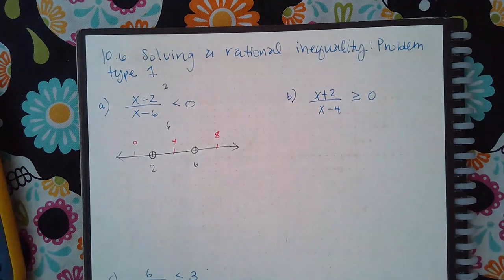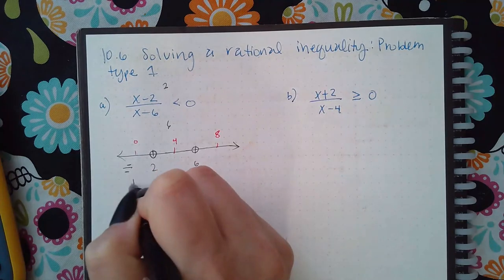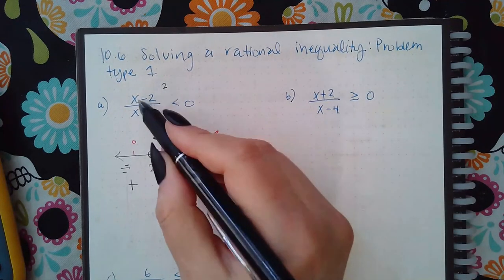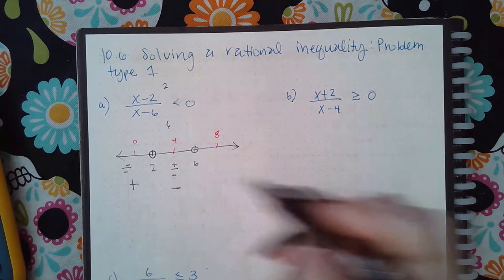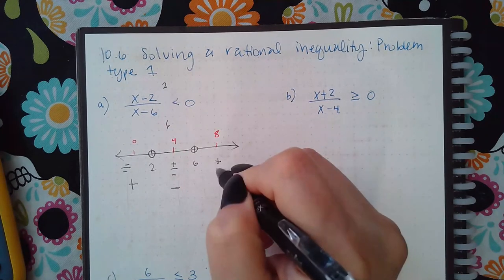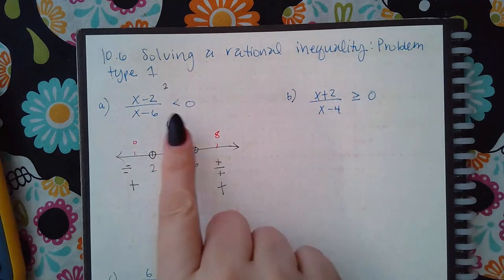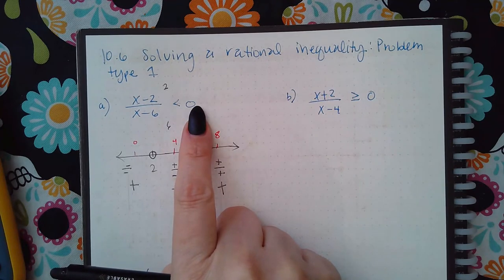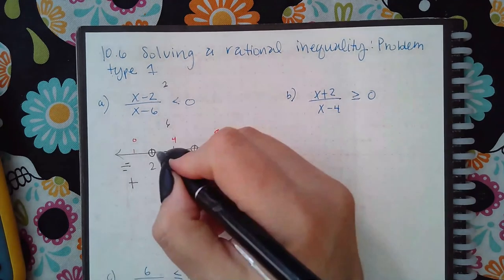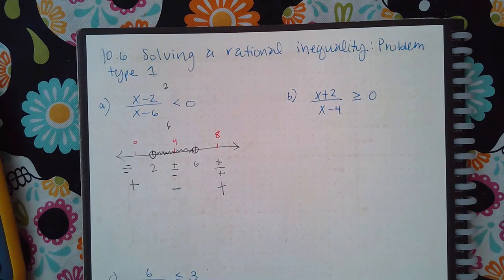Now I take my test points: zero, four, and eight, plugging them into the entire fraction. At zero I get negative two over negative six, which is positive. At four I get positive two over negative two, which is negative. At eight I get positive six over positive two, which is positive. Since I'm looking for values less than zero, I focus on the negative region.